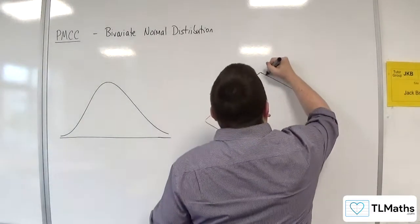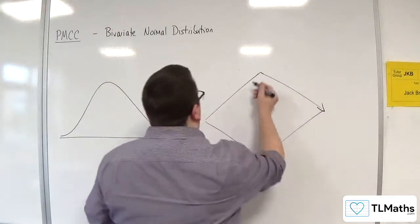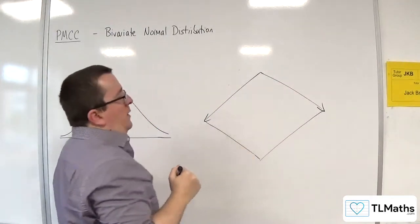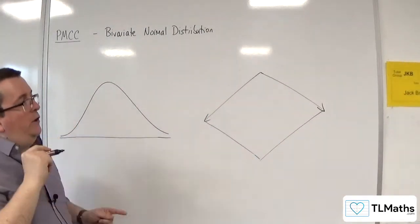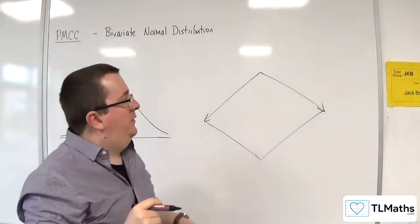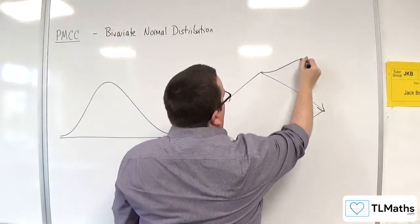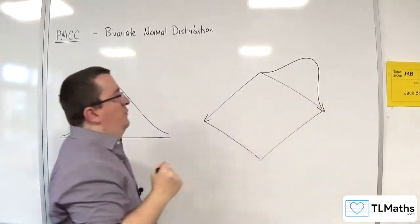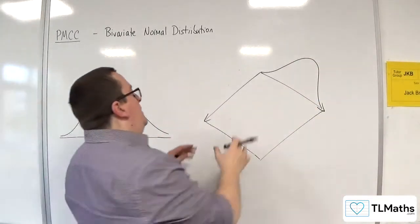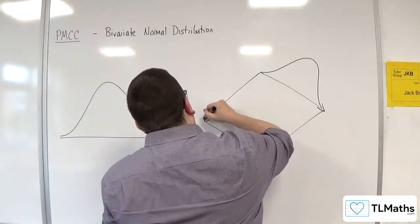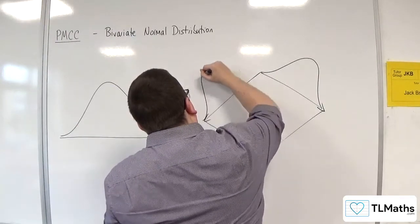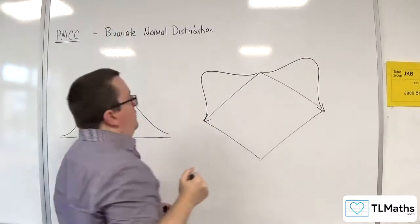And what I want you to imagine is that this is where your scatter graph is going to go. You've got one axis going that way and one axis going that way. So the data on this axis is normally distributed, and we could draw a normal distribution for that data there. And this data is also normally distributed, and we could draw a normal distribution for that data there.